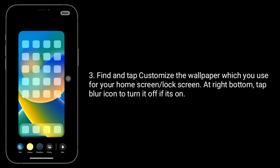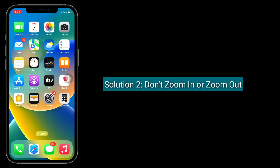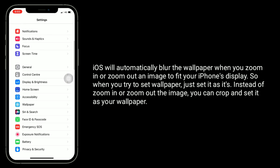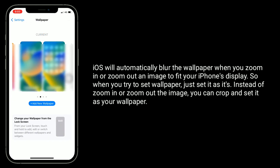The second solution is to not zoom in or zoom out. iOS will automatically blur the wallpaper when you zoom in or zoom out an image to fit your iPhone's display. So when you try to set a wallpaper, just set it as-is instead of zooming in or out. You can also crop the image and set it as your wallpaper.